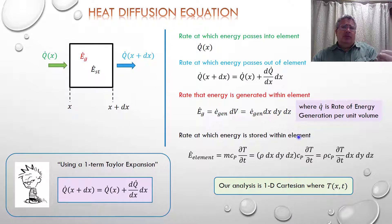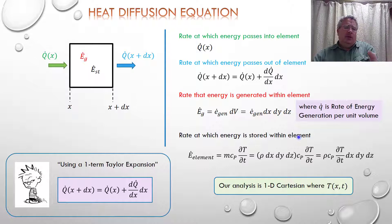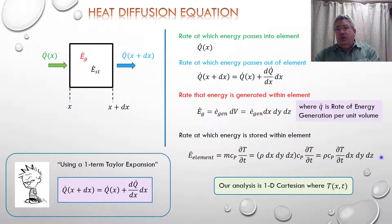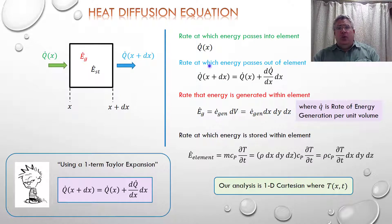The rate at which energy is stored within the element: we know the energy in a volume is m·c_p times absolute temperature. So we ask how that total energy changes as a function of time if we allow the element to heat up or cool down. We represent m as ρ — the density of the material — times the volume times c_p, times the time derivative ∂T/∂t. This will produce a dx·dy·dz term, just like the generation term.